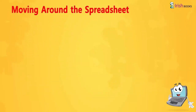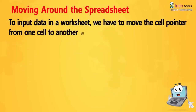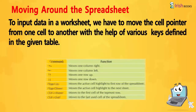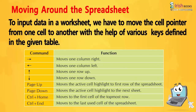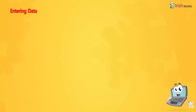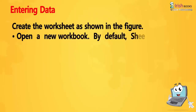Moving around the spreadsheet: To input data in a worksheet, we have to move the cell pointer from one cell to another using various keys. Right arrow moves one column right; left arrow moves one column left; up arrow moves one row up; down arrow moves one row down. Page Up moves the active cell to the first row. Page Down moves to the next sheet. Ctrl+Home moves to the first cell of the topmost row. Ctrl+End moves to the last used cell of the spreadsheet.